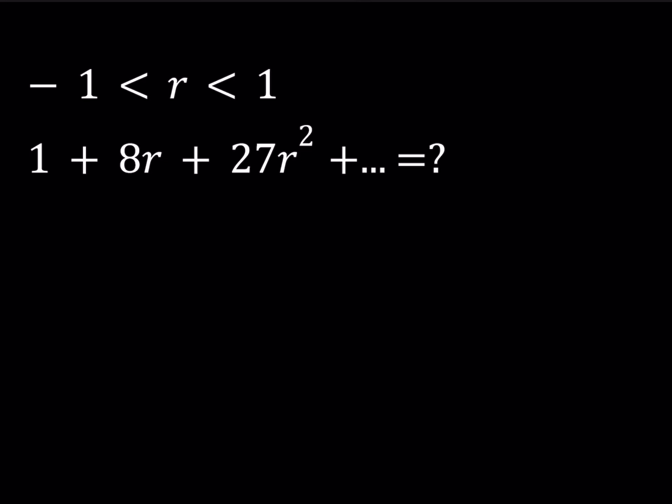So how are we going to handle this? There are a couple of ways to look at this problem. The method I'm going to use will involve some calculus. I want to use r to the power k as my reference, because that is used for the sum of a geometric series, and I want to get a term like k cubed times r to the power k minus 1.